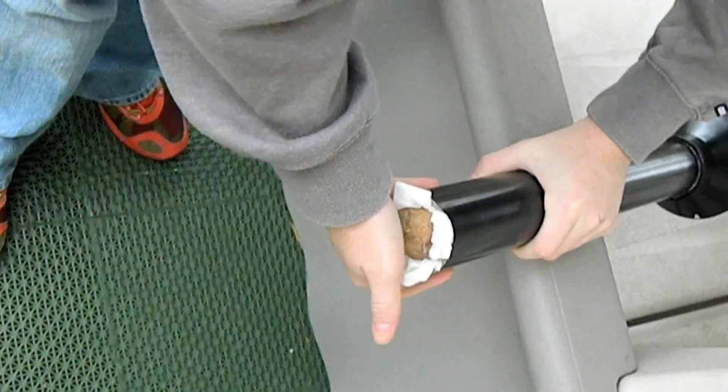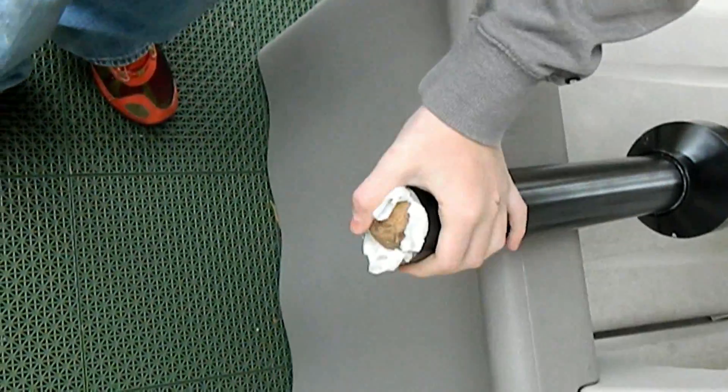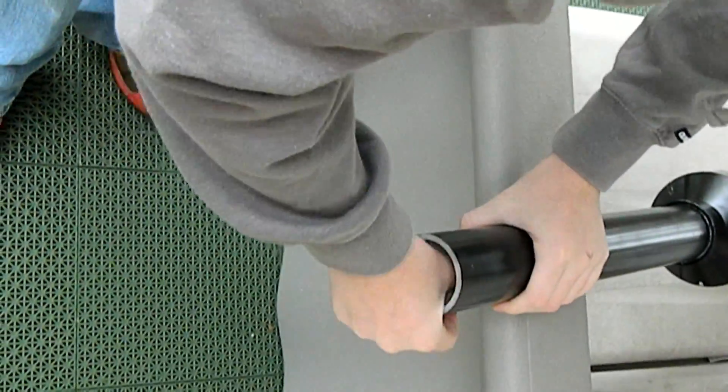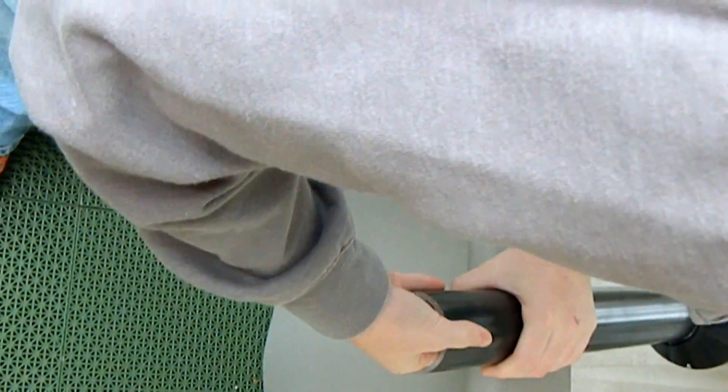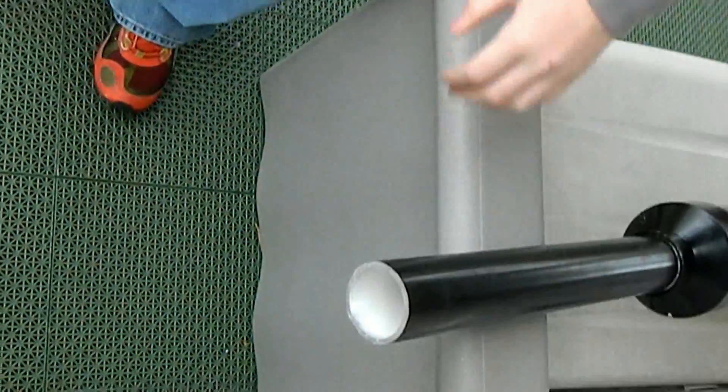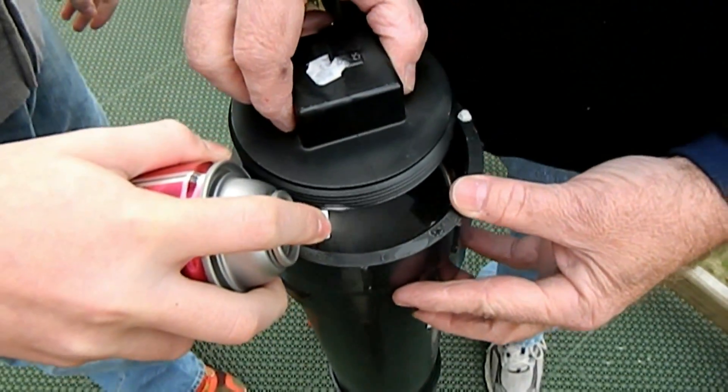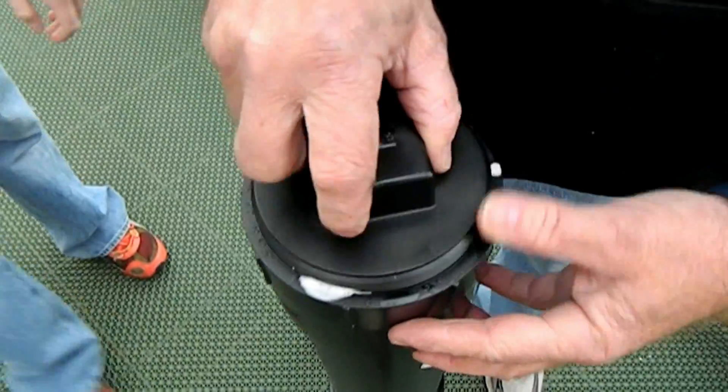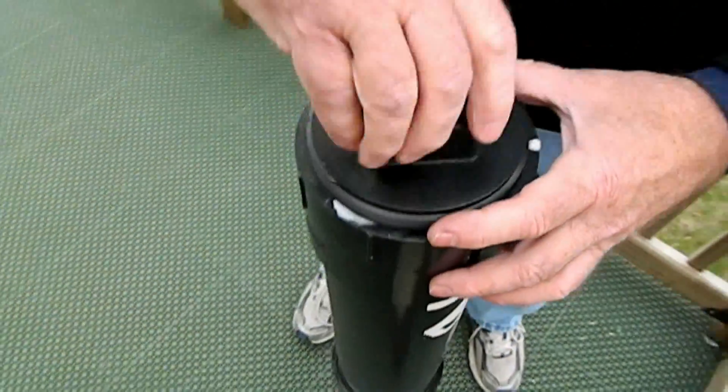Shove your potato in with a napkin so that no air leaks out, just in case your potato is not big enough. Spray 4 seconds of hairspray in and close the cap on the coupler.